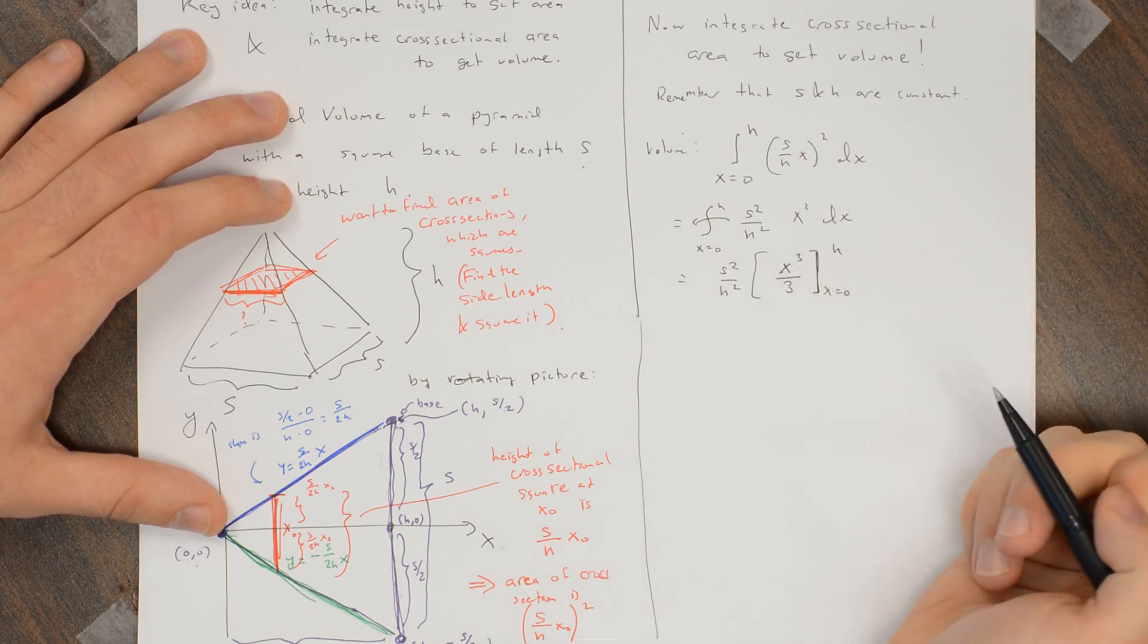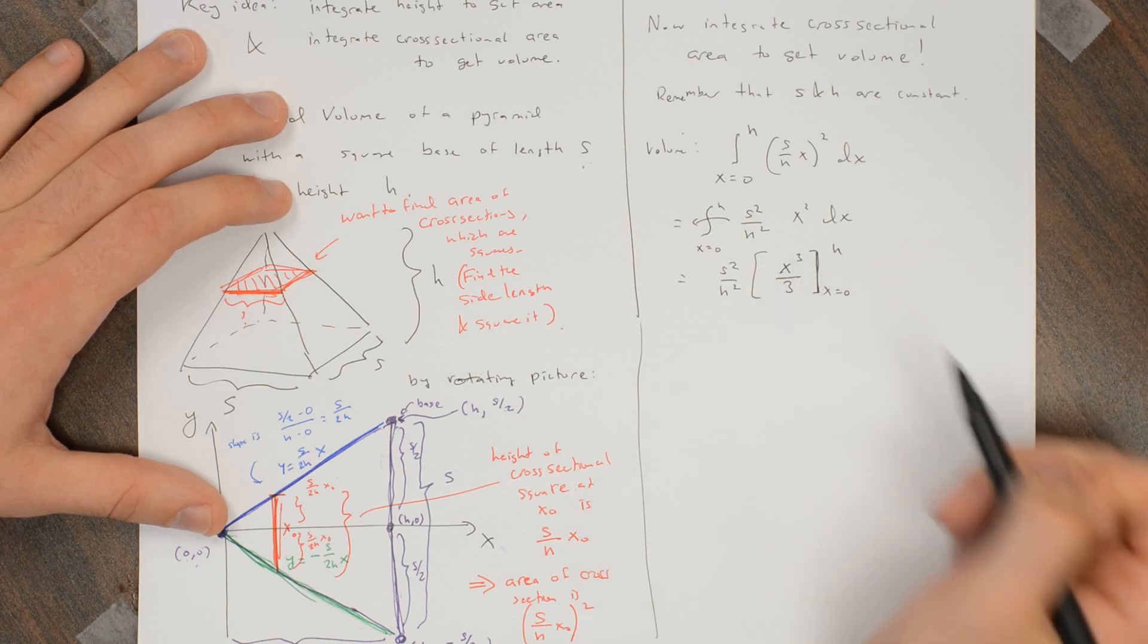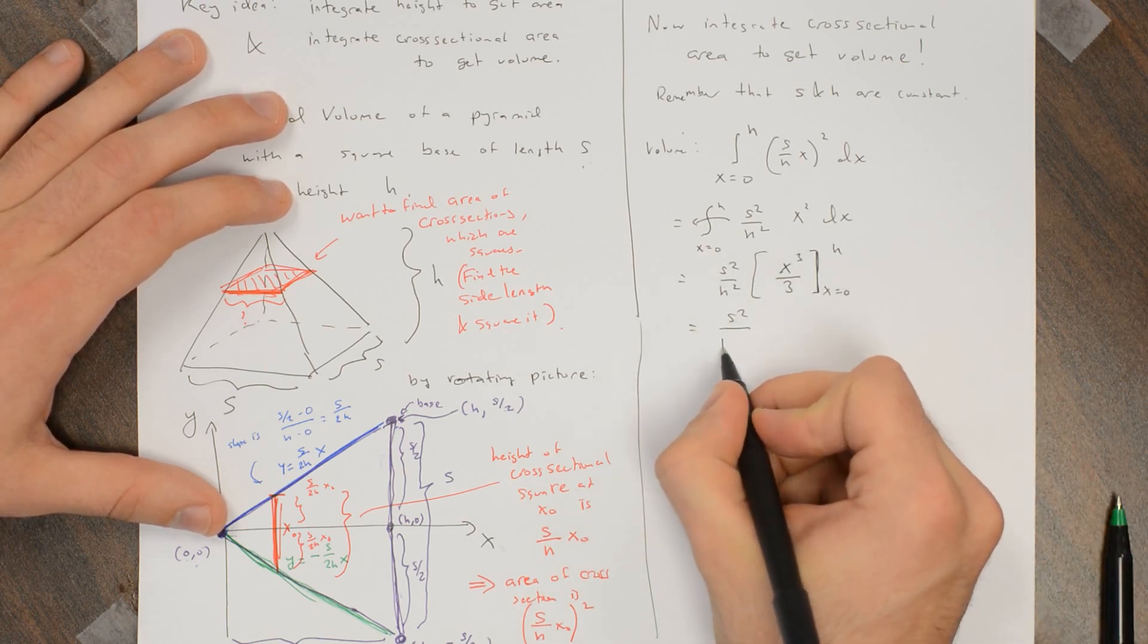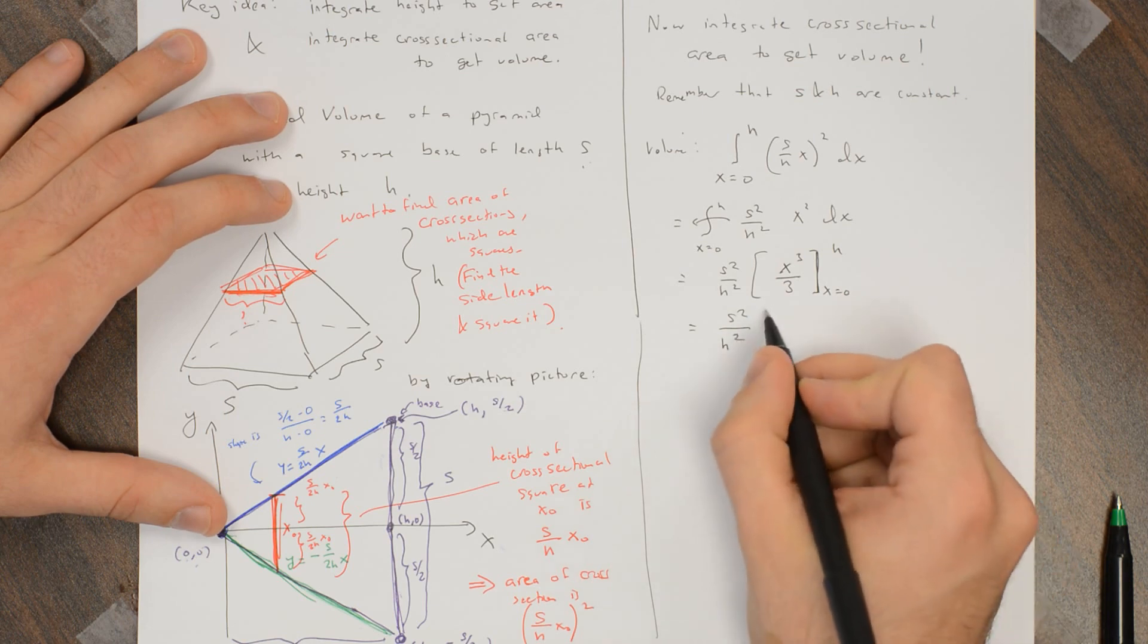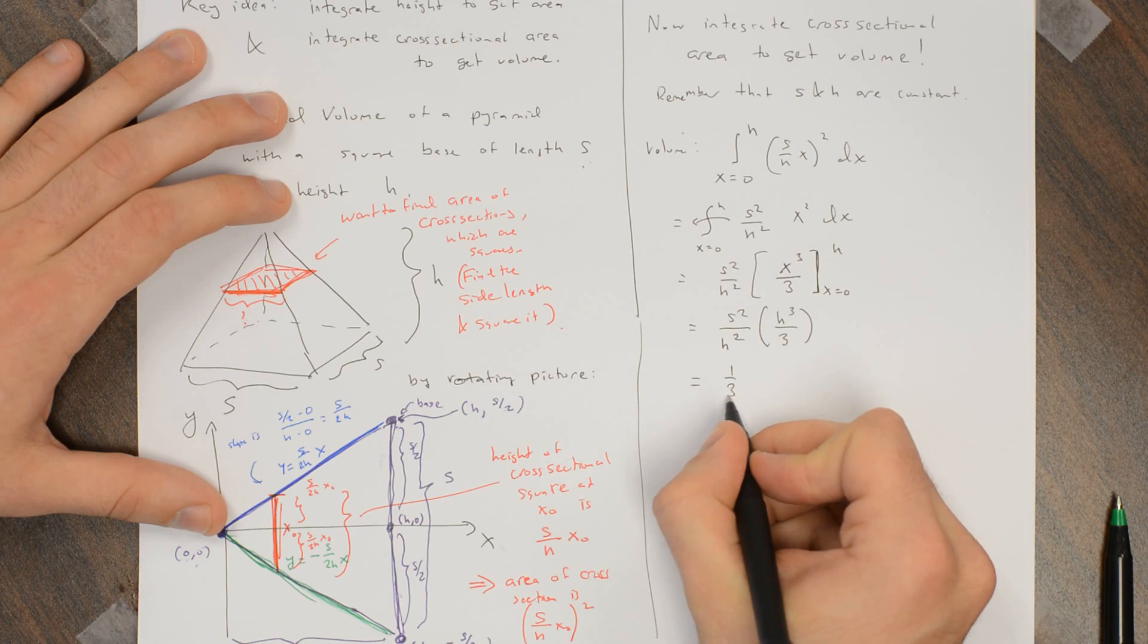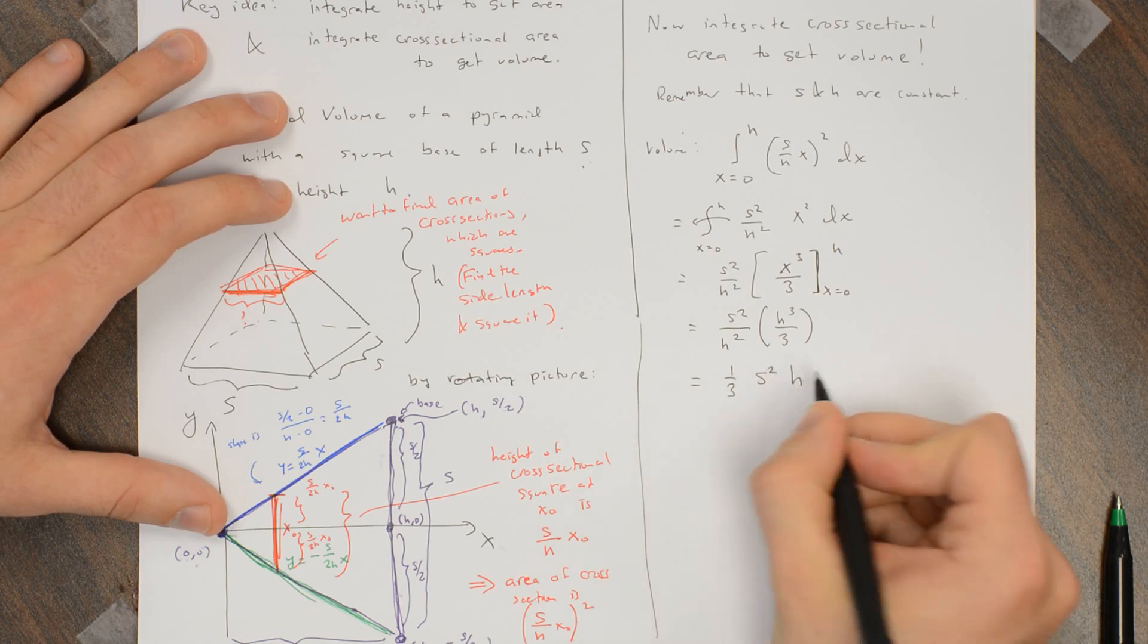And when you plug in h for x, you get h cubed, and you plug in 0 for x, you get 0. So this is s squared over h squared times h cubed over 3, or 1 third s squared h.